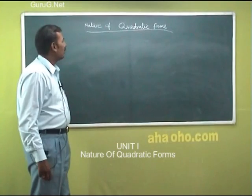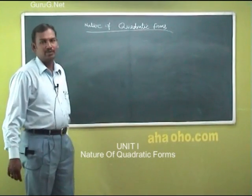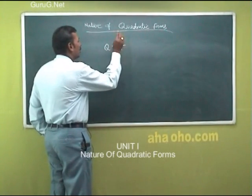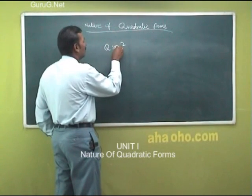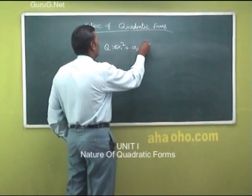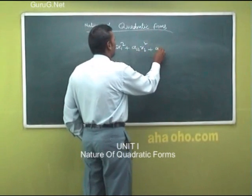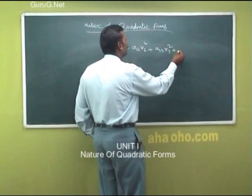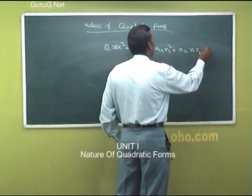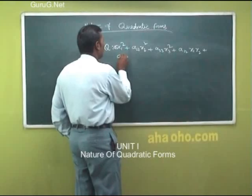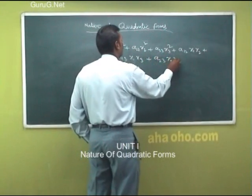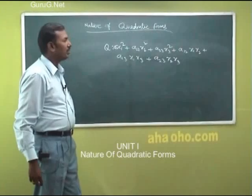In this class, let me explain the nature of quadratic forms. A quadratic form in the general case with 3 variables is: a₁₁x₁² + a₂₂x₂² + a₃₃x₃² + a₁₂x₁x₂ + a₁₃x₁x₃ + a₂₃x₂x₃. This is the quadratic form with 3 variables.